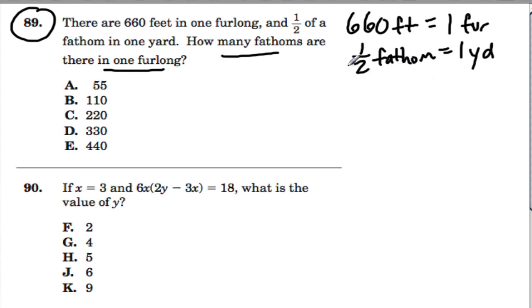Let's rewrite this bottom equation and set it up. Multiply both sides by two and get one fathom equals two yards. One furlong equals 660 feet. Remember that one yard equals three feet.